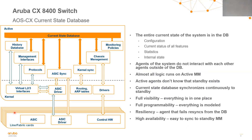Looking at the database structure of the CX 8400, we use a current state database within both the active and standby management modules. The entire state of the system — the configuration and the status of all protocols and agents running in the system — is copied to this current state database. All agents in the system don't interact directly with each other; they interact directly with that current state database to get the information they require. This logic runs on the active management module, and the database is continuously synchronized to the standby module, providing full visibility, full programmability, and resiliency.